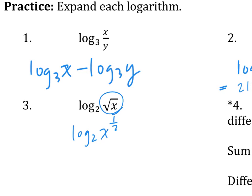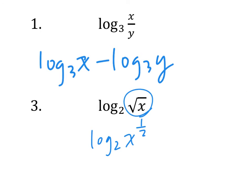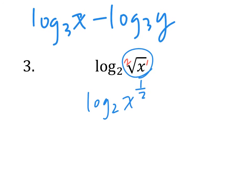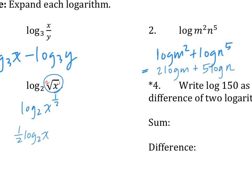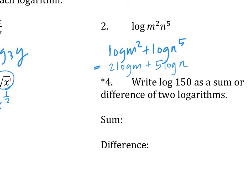One half — that's x to the one half power. If you forgot this, review your notes from last year. The power is one, the index is two, therefore the fractional exponent is one half — power over index. So this becomes one half times log base two of x. For log 150 as a sum: log 15 plus log 10. As a difference: log 300 minus log 2.